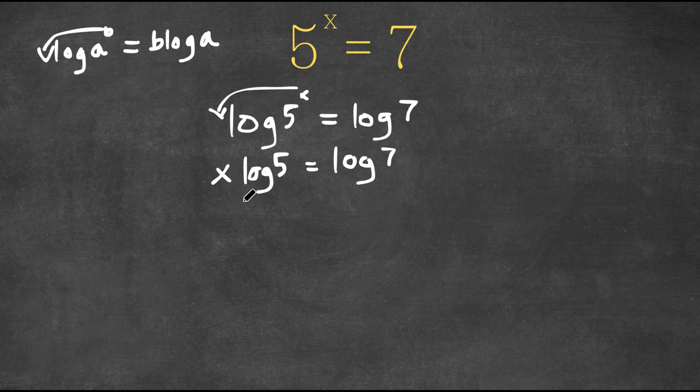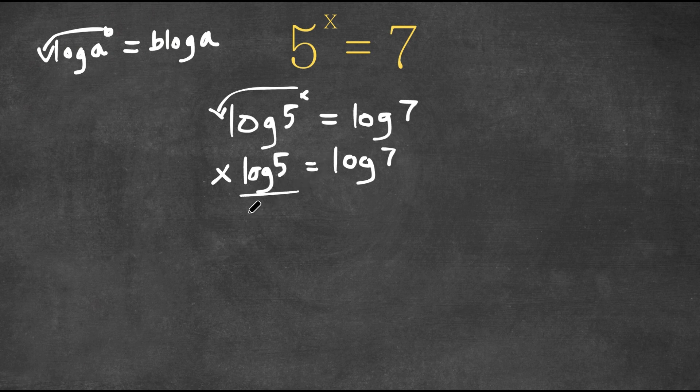Now, I actually want to isolate x because that's the thing we want to find the value of. So I'm going to divide by log 5 on both sides to get rid of the log on this side and to move it to the right side.